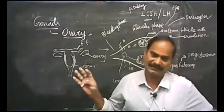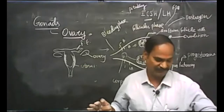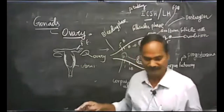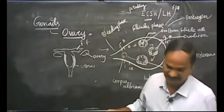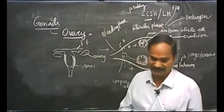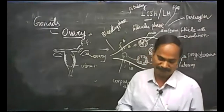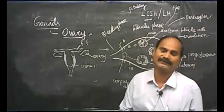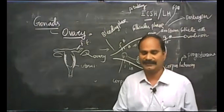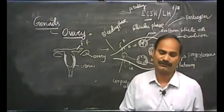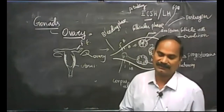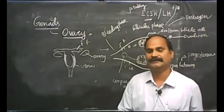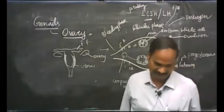With that, thymus gland and all the endocrine glands are completed. The human endocrine glands we have studied are: pituitary gland, thyroid gland, parathyroid gland, pancreas (islets of Langerhans), adrenal gland — adrenal cortex and adrenal medulla — gonads (testes and ovary), and thymus gland.